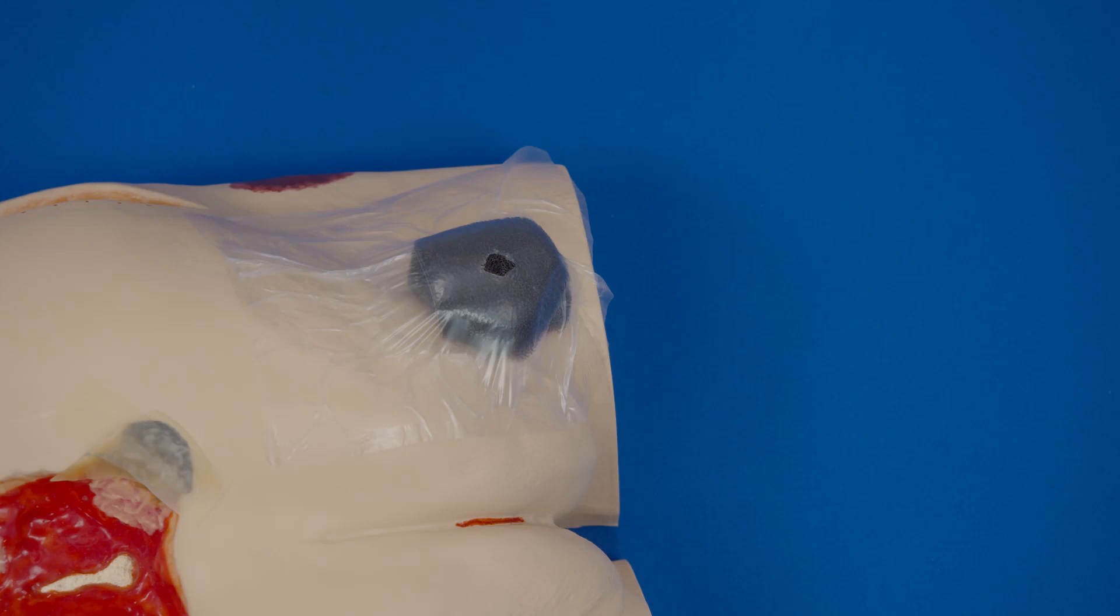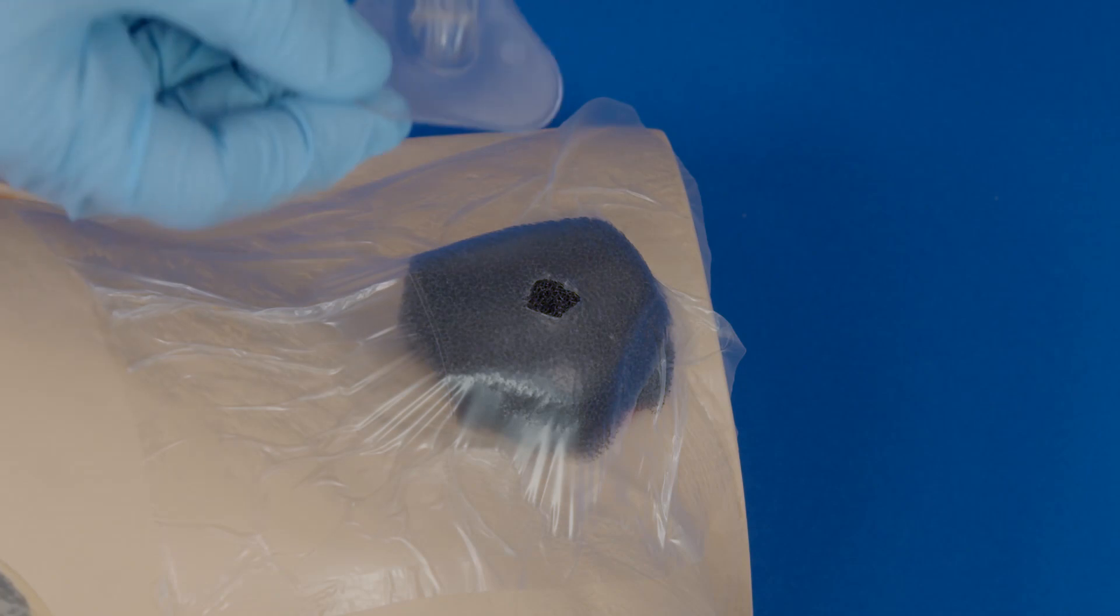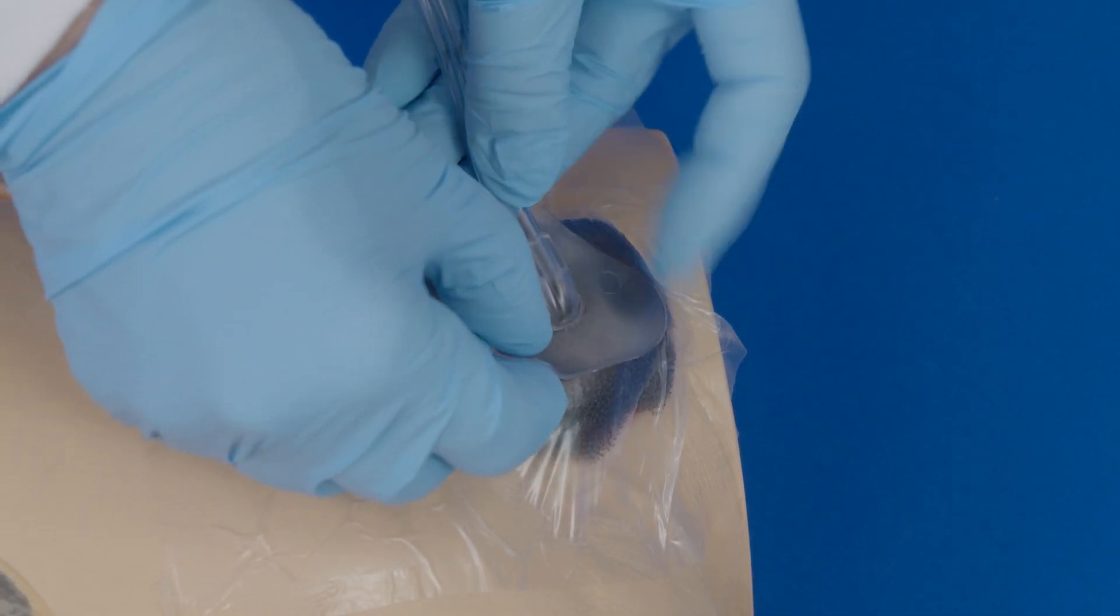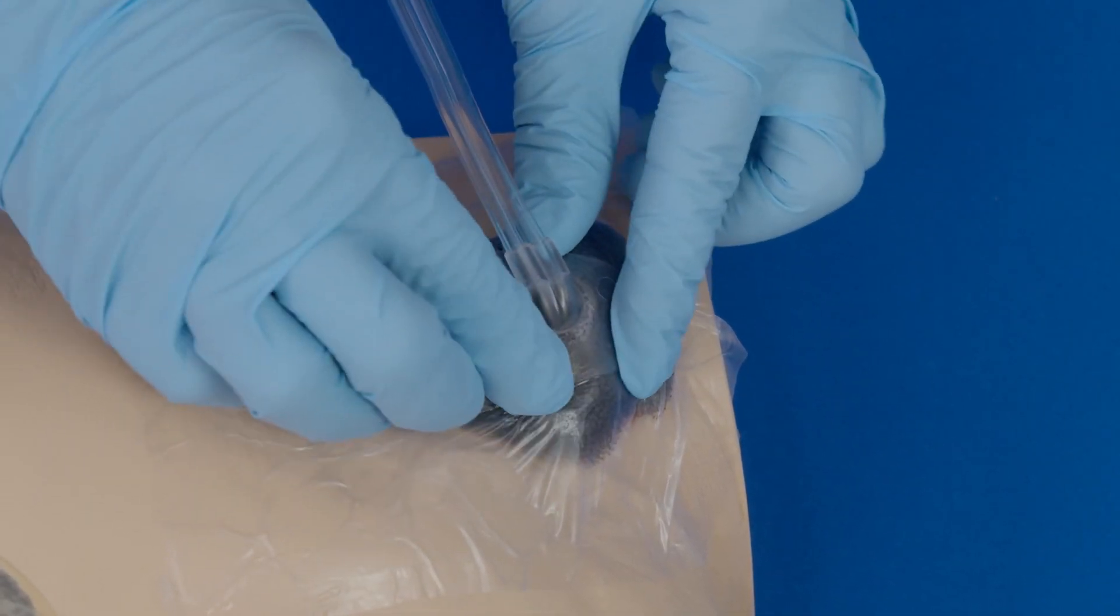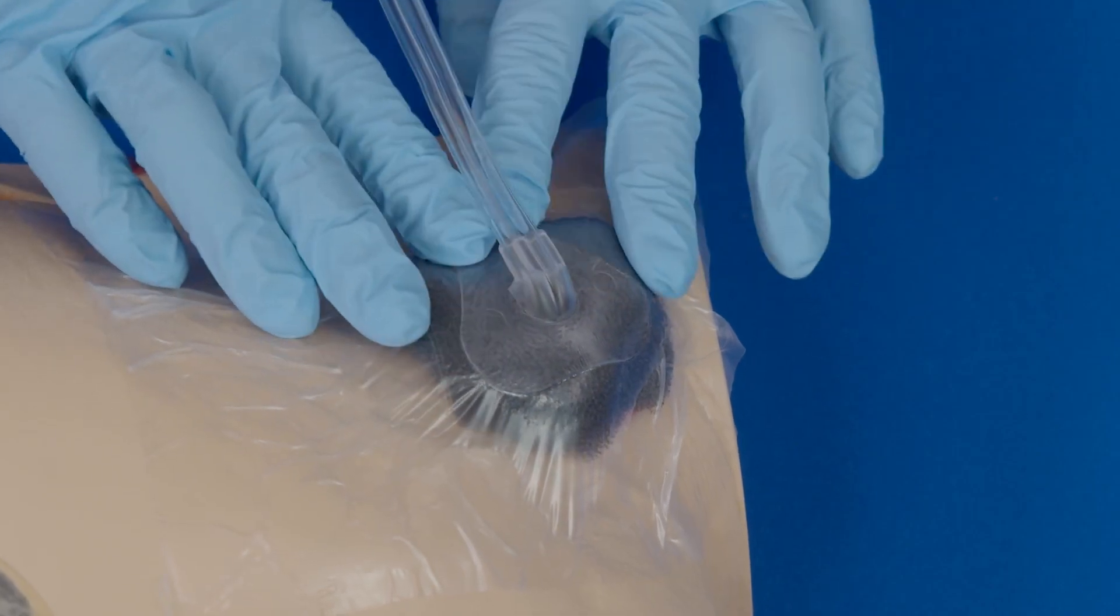Peel the white backing off of the FitPad to expose the adhesive. Place the FitPad centered over the previously cut hole in the dressing. Press firmly for adherence.